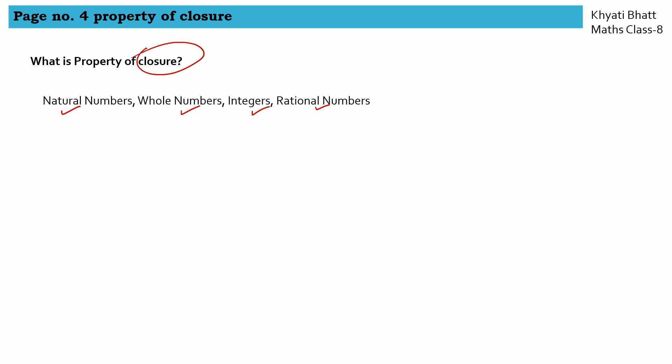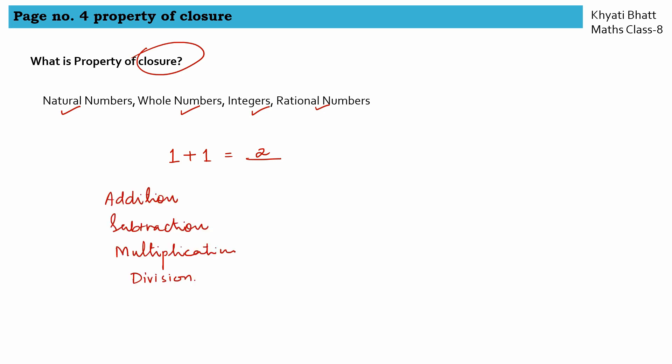Let us understand the first property of closure. If we take a natural number, for example 1, and add 1 plus 1, the answer should be a natural number. 2 is a natural number, so yes, natural numbers are closed under addition. For each number type, we are going to check four operations: addition, subtraction, multiplication, and division, and see whether they are closed. The answer can be yes or no.